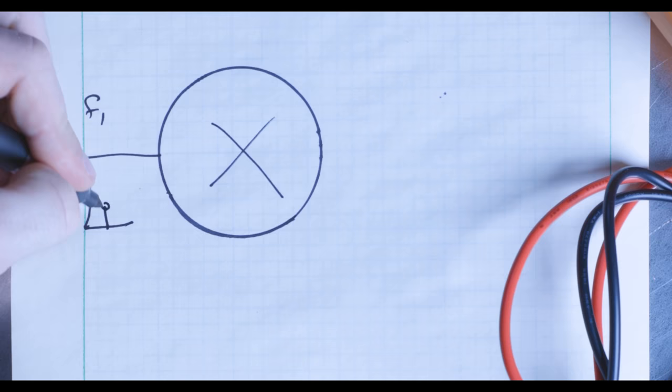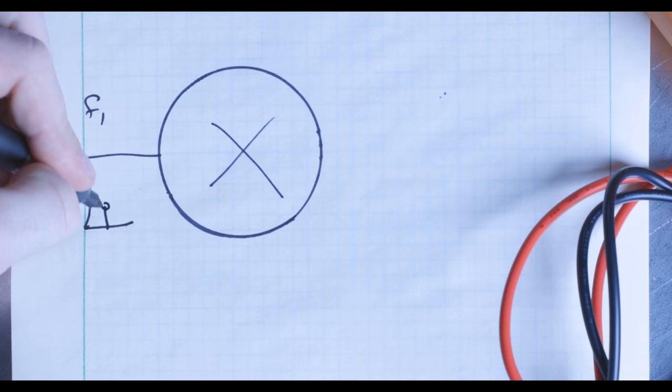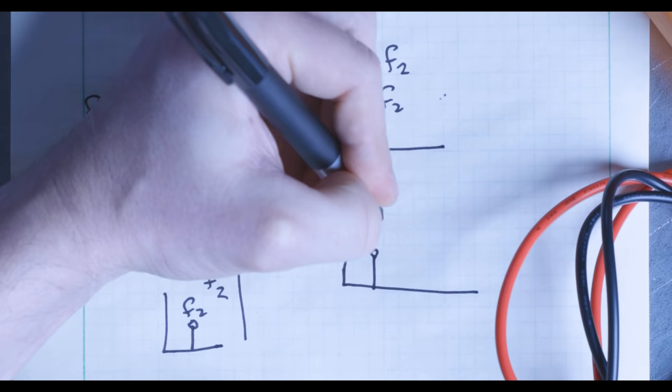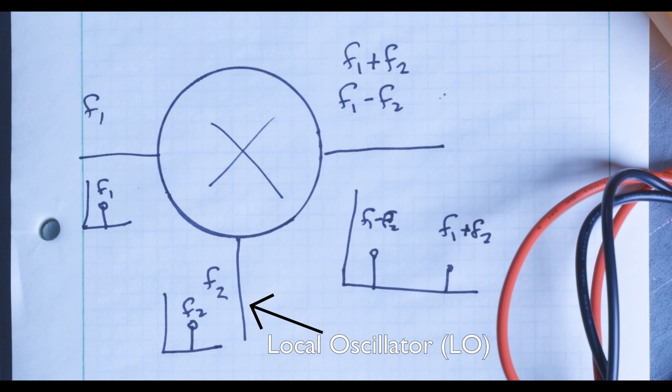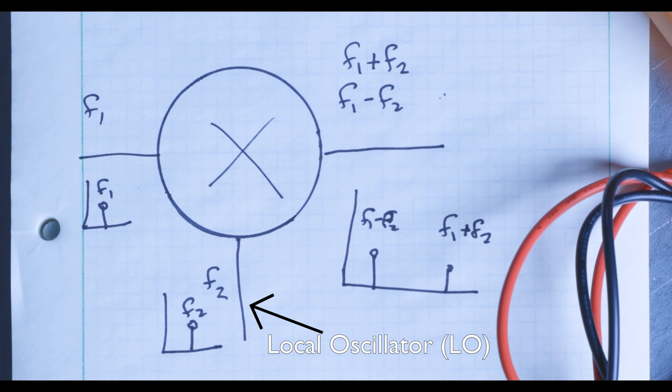Hi, I'm Matt, and to understand IF bandwidth, first we have to talk about mixers. When you put two signals at different frequencies into a mixer, the output will be two more signals: one at a frequency of f1 plus f2, and another at a frequency of f1 minus f2. You can use a local oscillator as one of your mixer inputs to tune input frequencies to your desired output frequency. This output frequency is called the intermediate frequency, or IF. Those of you with a radio background are probably saying this is just your standard superheterodyne receiver — and you're right. Network analyzer receivers operate in a very similar way to radio receivers.